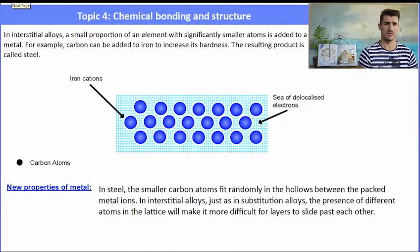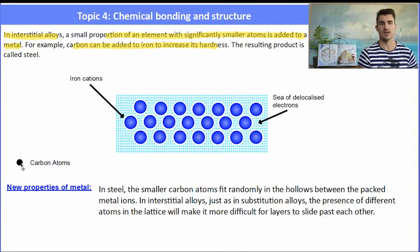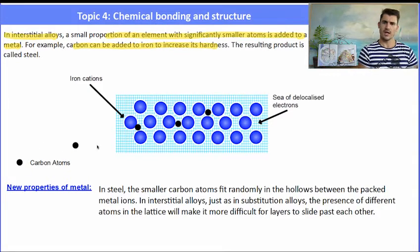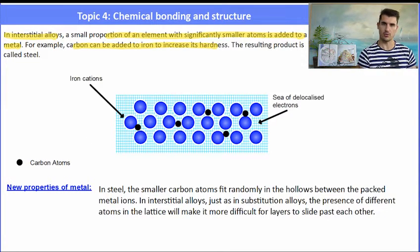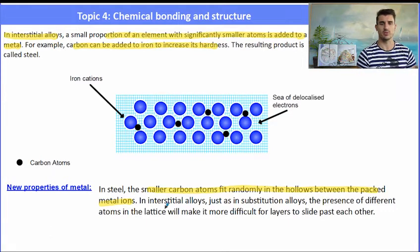The second type of alloy is an interstitial alloy. That's where we place in a smaller atom into the layer, into the lattice of positively charged cations. So for example this one is like stainless steel or steel where we have added in carbon atoms into the lattice of iron, and that also helps with restricting the movement of the layers. The layers can't move past each other. Interstitial basically means that the carbon atoms fit into the hollows between the different metal ions. It's going to make them harder to slide past each other.